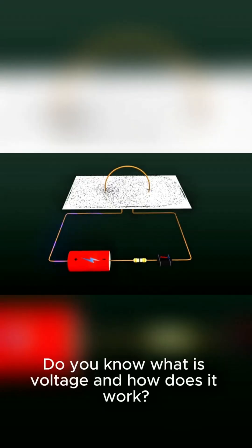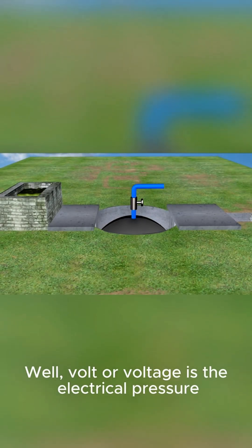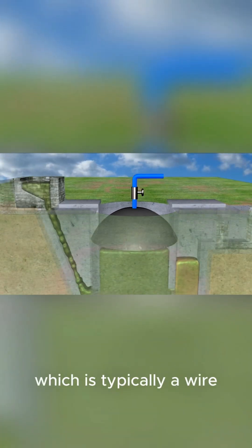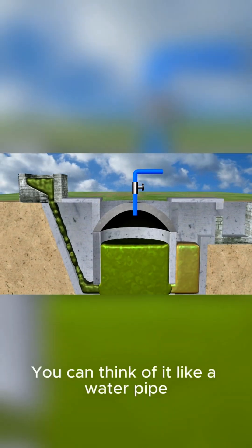Do you know what is voltage and how does it work? Well, volt or voltage is the electrical pressure that causes electrons to move through a conductor, which is typically a wire. You can think of it